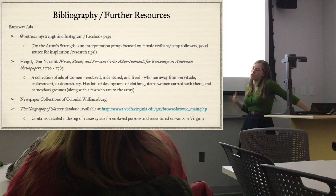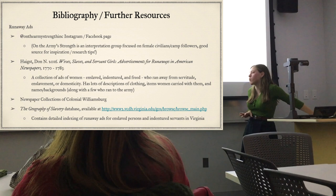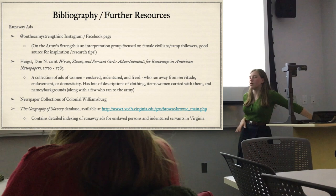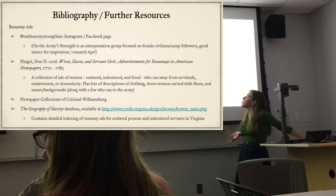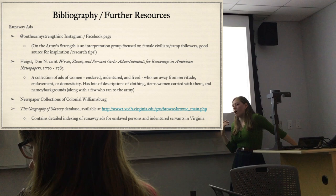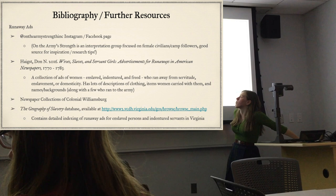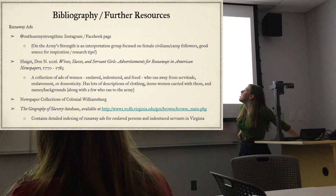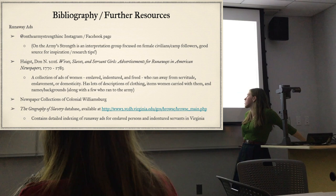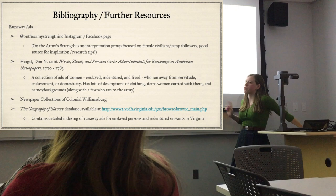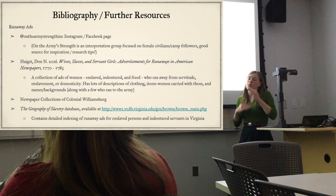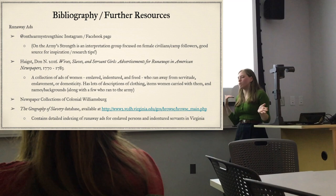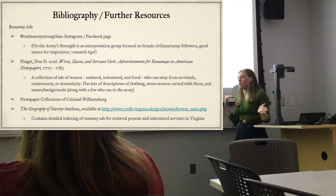For runaway ads: there's the On the Strength Instagram, where their interpretation group focuses mostly on female civilians and camp followers, with lots of tips for interpretation and research. There's Don Haks's Wives, Slaves, and Servant Girls - a collection of runaway ads for women. You can also find these through newspaper databases using keyword searches. The Geography of Slavery database through the University of Virginia is a very detailed index of runaway ads for both enslaved persons and indentured servants, mostly in Virginia, grouped by year, name, and geographic place.